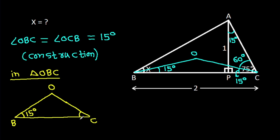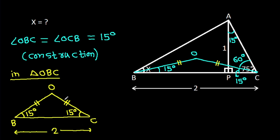This angle is 15 degrees, so OB will be equal to OC. BC is 2, and this is an isosceles triangle.